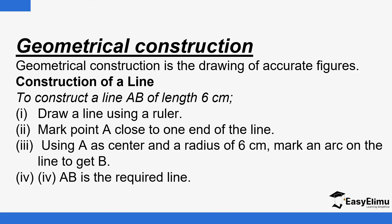To construct a line AB of length six centimetres, you follow these procedures. Procedure number one: use a ruler to draw a line, then mark the first point A close to one end of the line. Then using A as the centre — the sharp end of the pair of compasses is what we call the centre — and a radius of six centimetres. In this geometry context, the radius means the distance between the tip of the pencil and the sharp end of the pair of compasses.